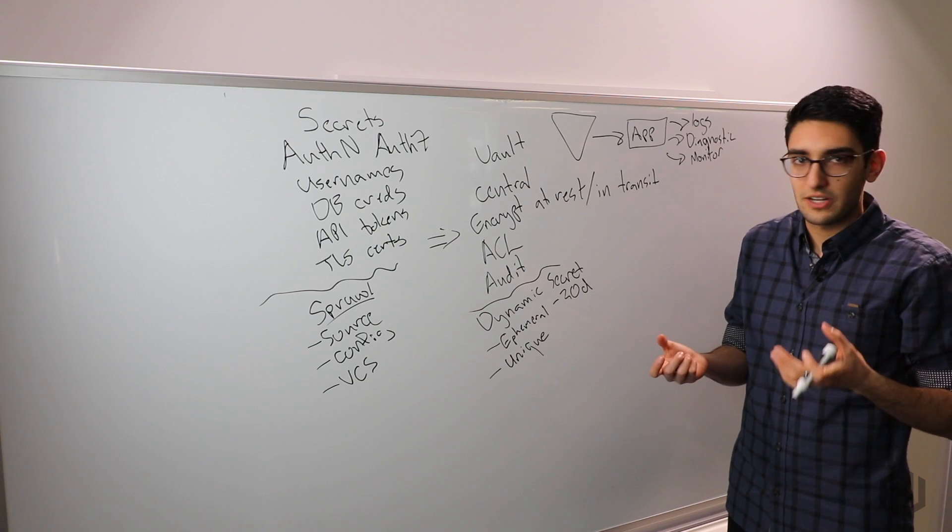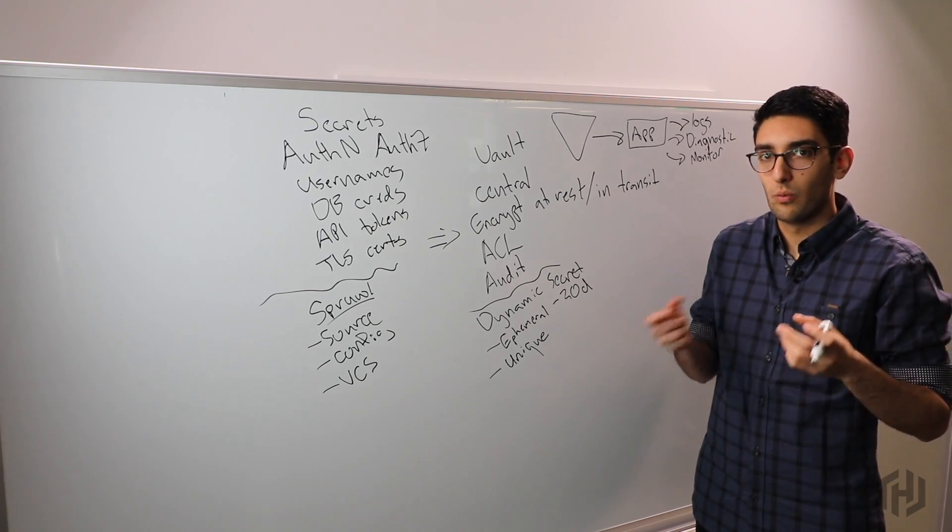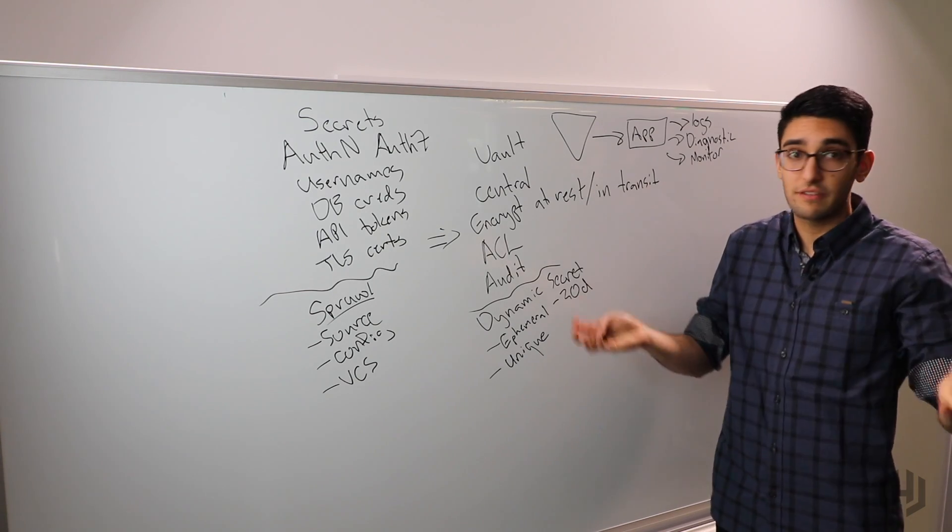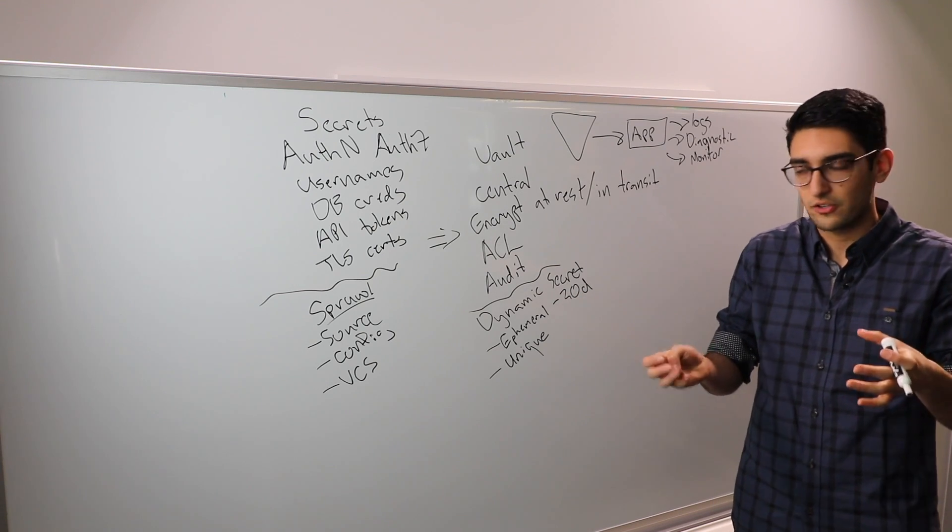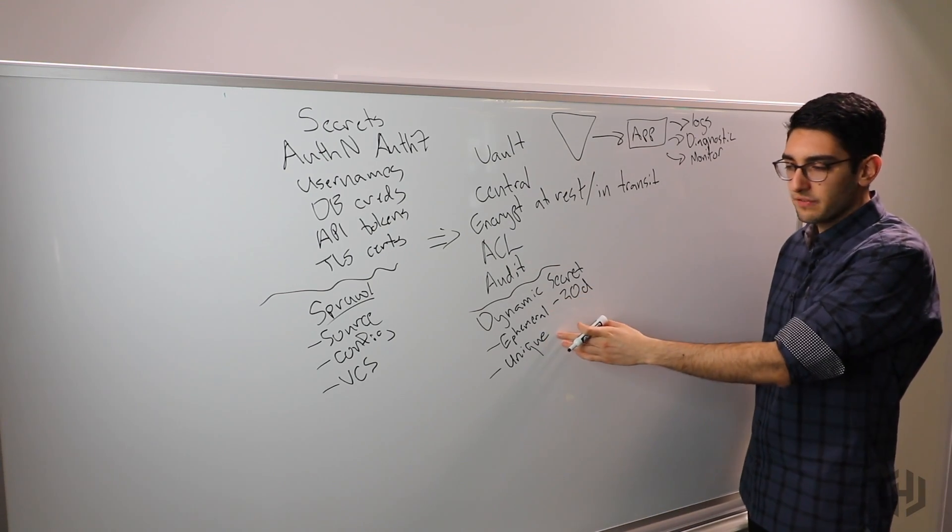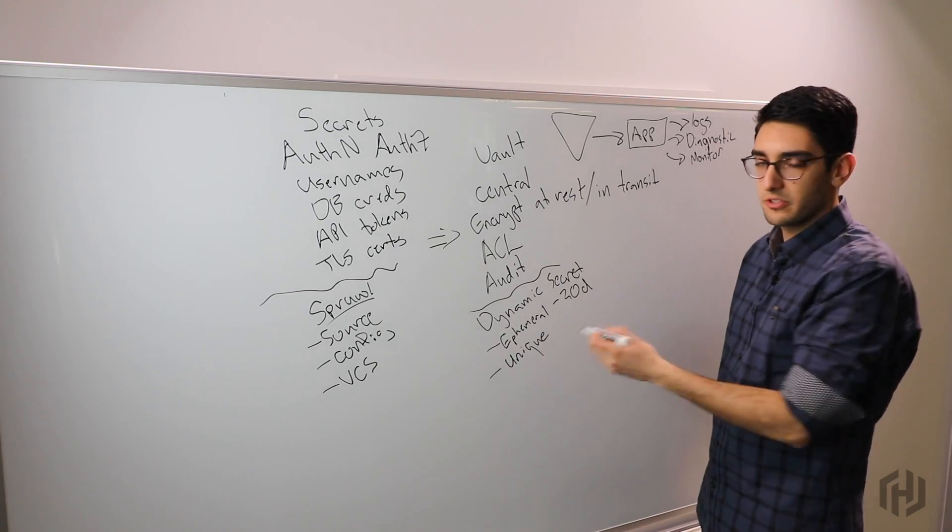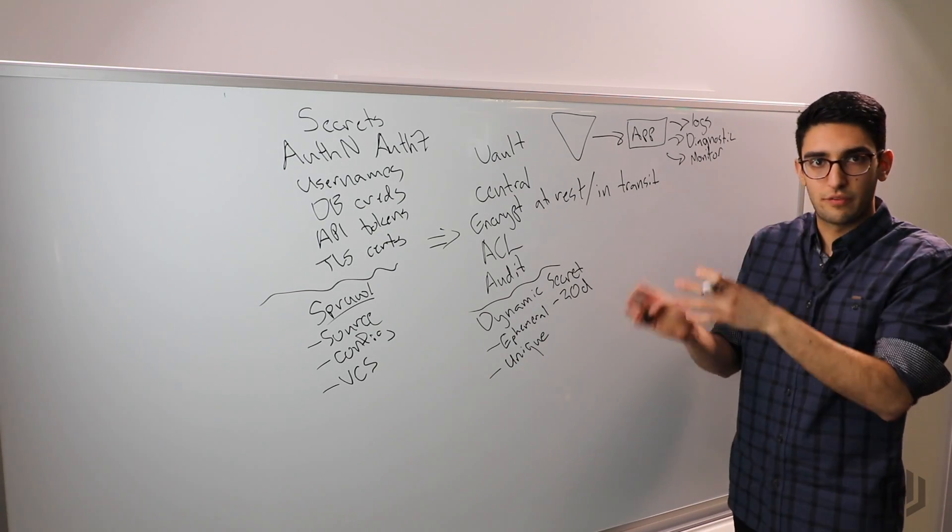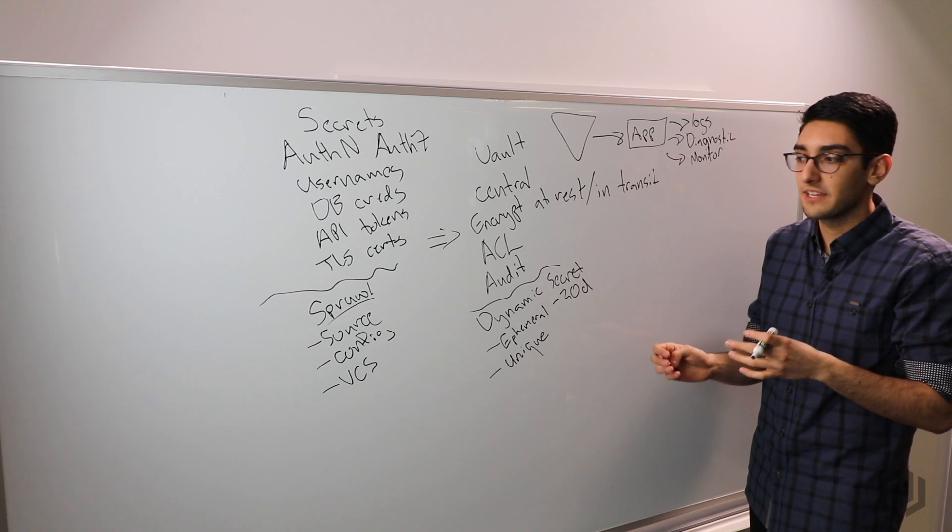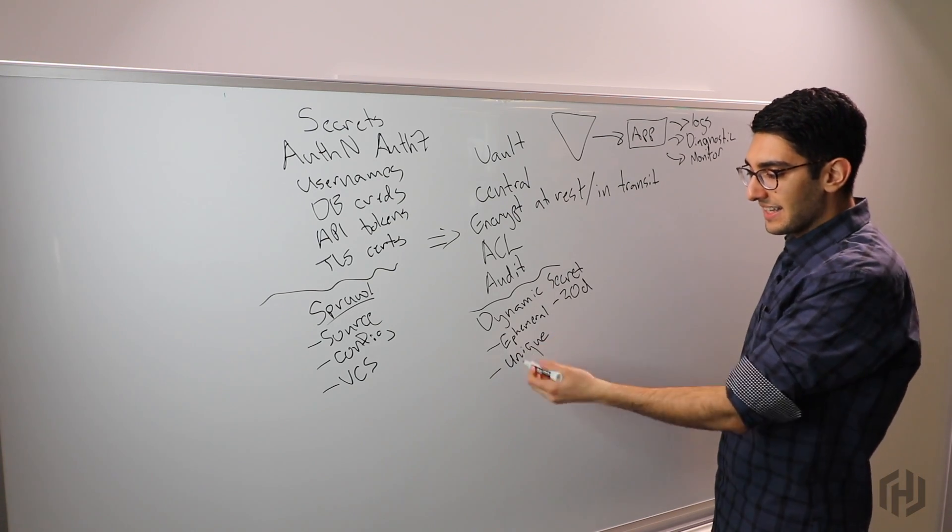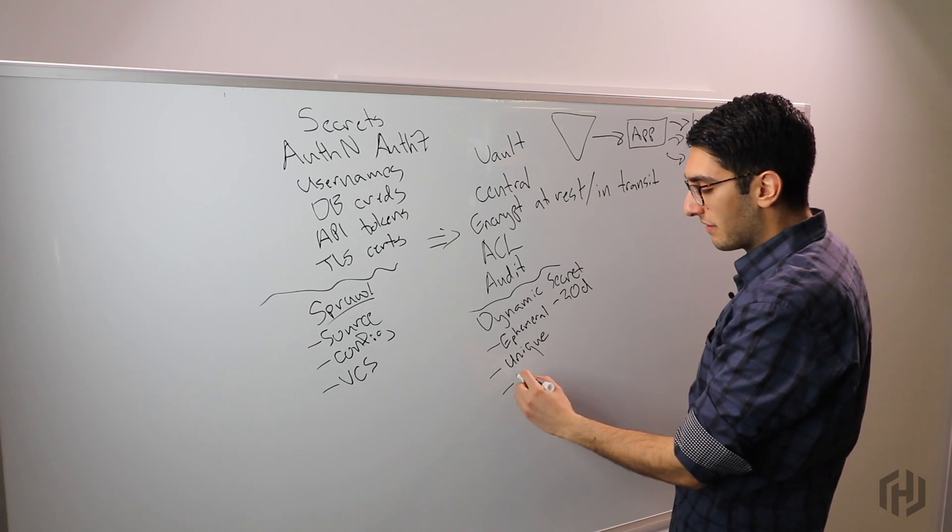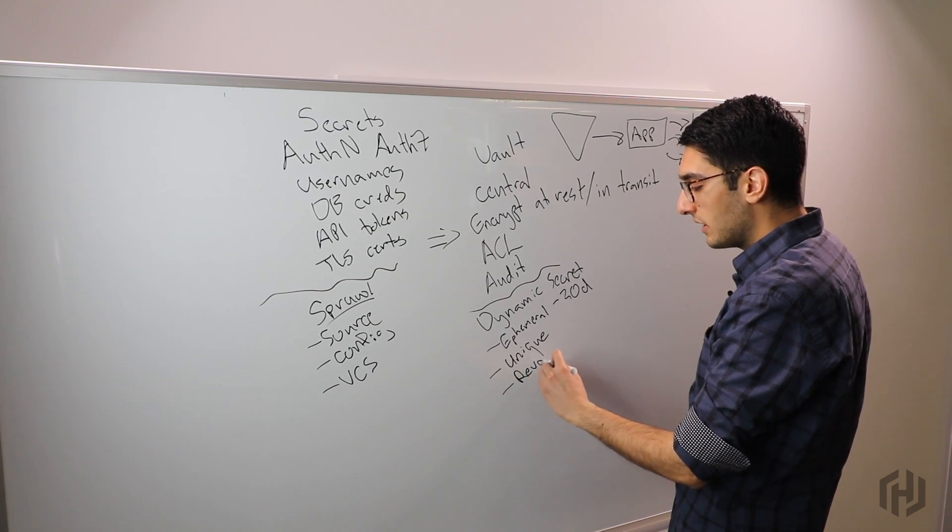There's 50 servers all sharing the exact same credential, versus in a dynamic secret world each of those 50 web servers had a unique credential. You know very specifically web machine 42 was the point of compromise. The last thing this lets us do is have a much better revocation story. If we know web machine 42 was our point of compromise, we can revoke the username and password for just web machine 42 and isolate that leak.